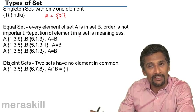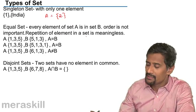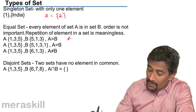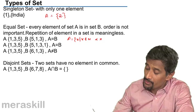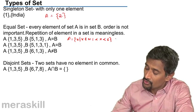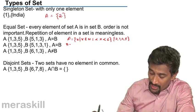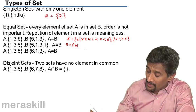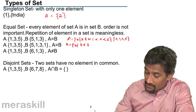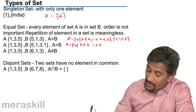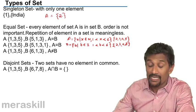Then we have equal sets. Two sets are said to be equal if every element in the first set is present in the second set and every element in the second set is also present in the first set — they have identical elements. For example, A is the set of all natural numbers between 1 and 6, giving {2, 3, 4, 5}, and B is the set of all integers b such that b belongs to integers and 1 < b < 6, also giving {2, 3, 4, 5}. These sets are said to be equal.